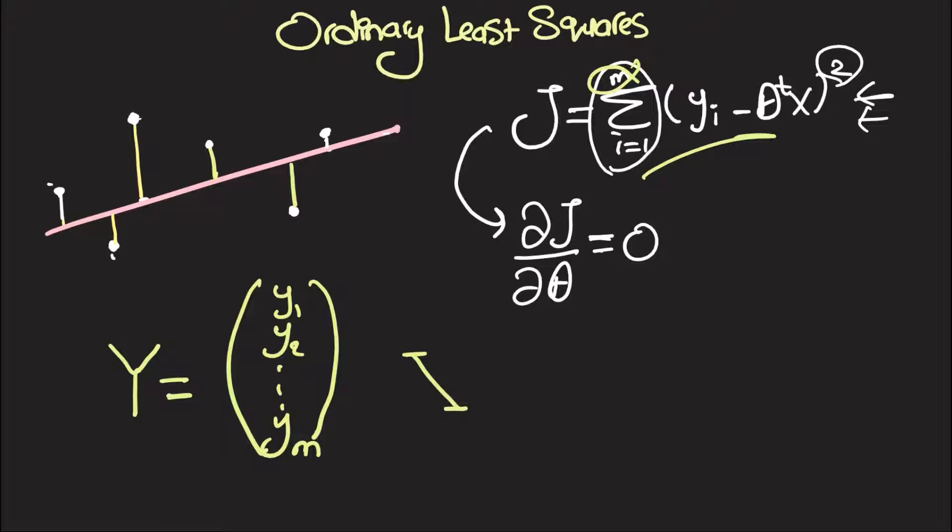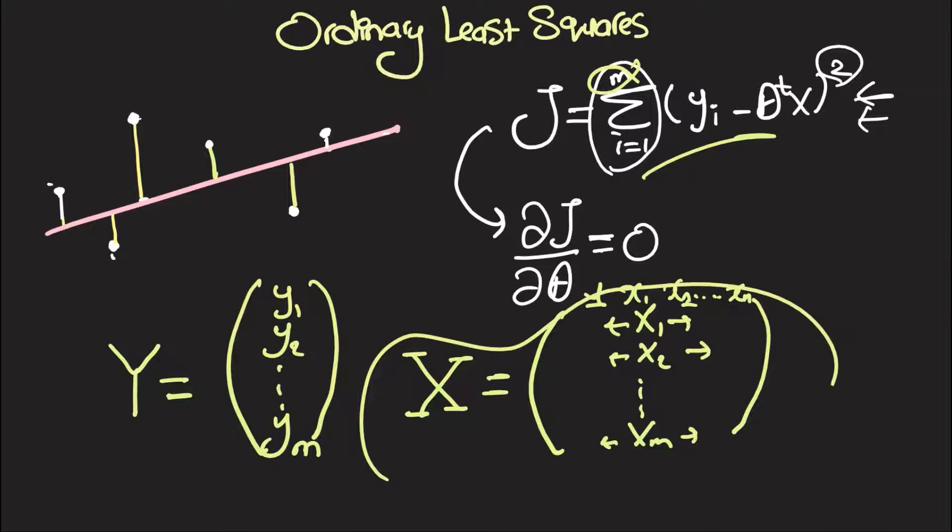We'll also define X, and X is also going to have x1, x2, all the way to xm. Now notice that each X of these is a row vector that has 1 in the first feature, the second feature, all the way to the nth feature. And that thing is actually called the design matrix.